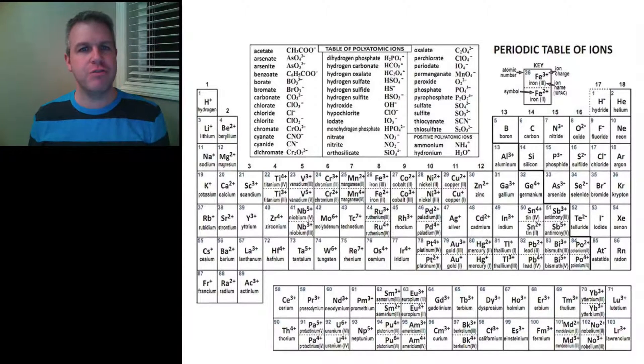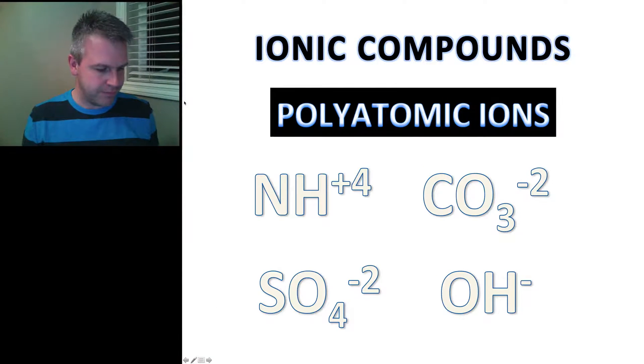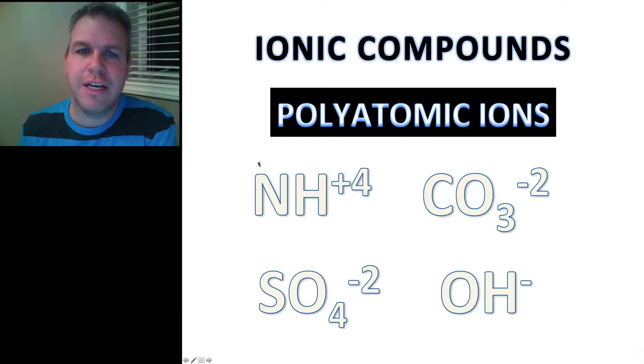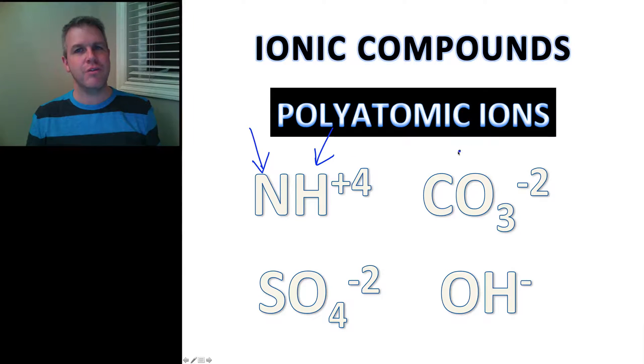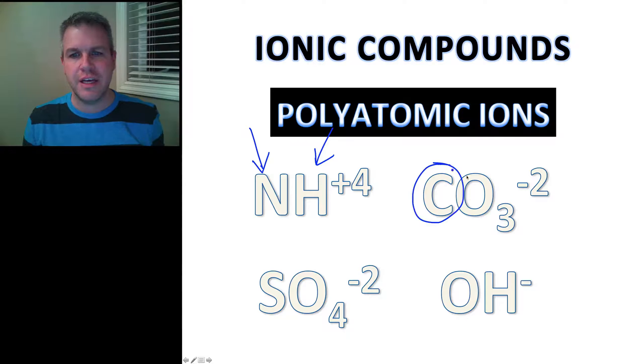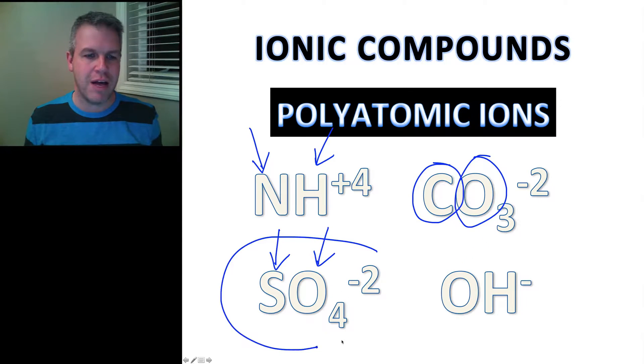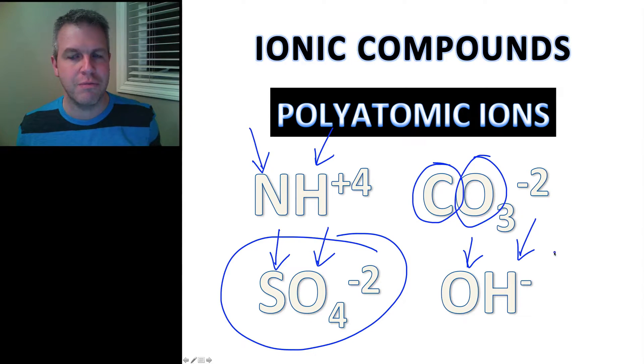And as long as you understand that when you see them, the easiest way to recognize polyatomic ions is that there is more than one element present. How do I know that there's more than one element present? When I see more than one capital letter. So here we have sulfur and oxygen together that form an ion. We have oxygen and hydrogen that form an ion together.